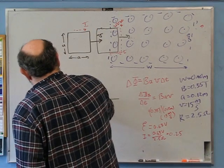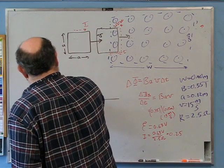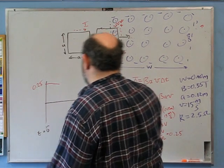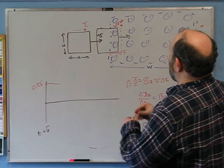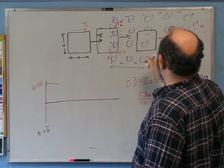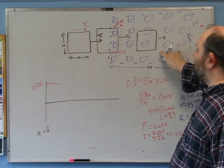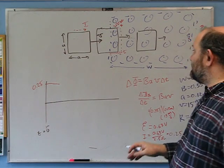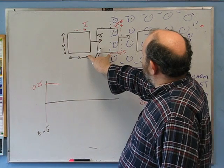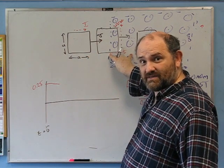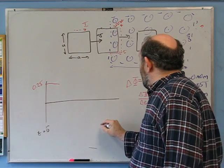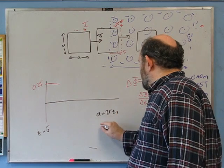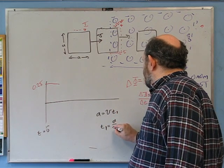This positive current lasts until the loop is completely inside the field. That starts at t₁ = a / v = 0.12 / 15 = 0.008 seconds. After that, the loop is fully inside and the flux is not changing as the loop moves, so there's no EMF and no current. The loop needs to travel a further distance of W - a before it starts to exit, so t₂ = t₁ + (W - a) / v = 0.008 + (0.40 - 0.12) / 15 = 0.008 + 0.0187 ≈ 0.027 seconds.